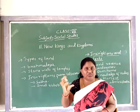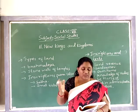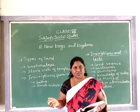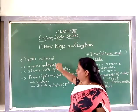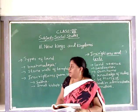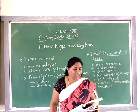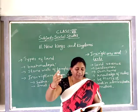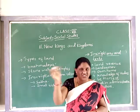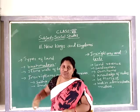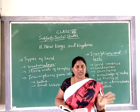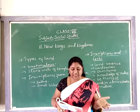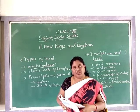The several categories of land are: Vellanvagai - land of non-Brahman properties; and Brahmadeya - land gifted to Brahmans. Brahmadeya means the land which is given to the Brahmans is called Brahmadeya. And Shalaboga means land for the maintenance of a school.